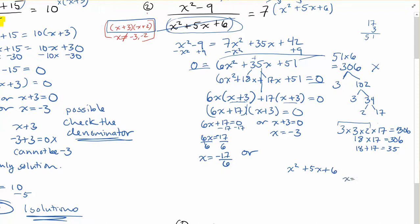If I try x = -3, that's (-3)² + 5(-3) + 6. That's 9 + (-15) + 6 = 0. Nope. Not allowed. We cannot have x = -3. So it's not a solution.